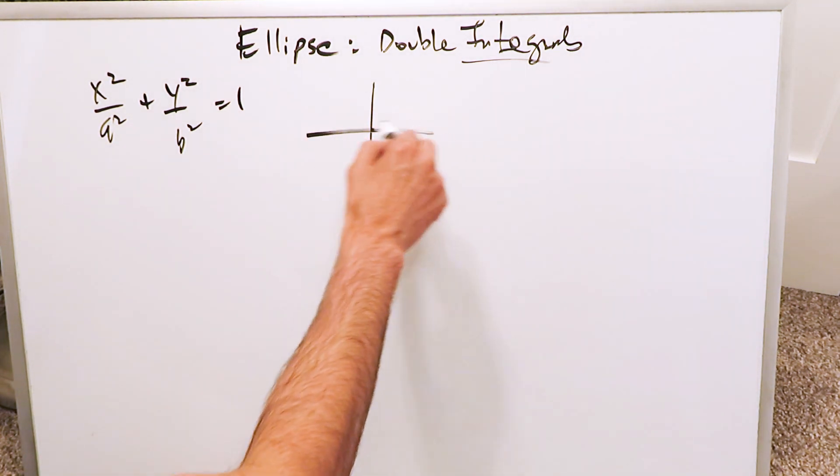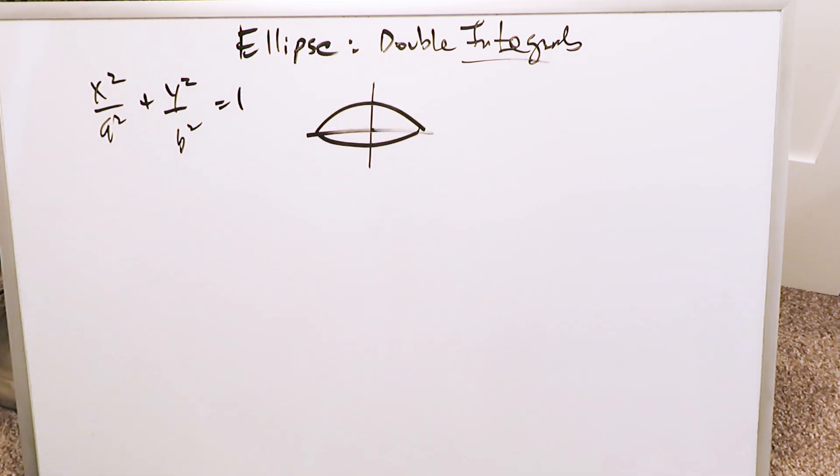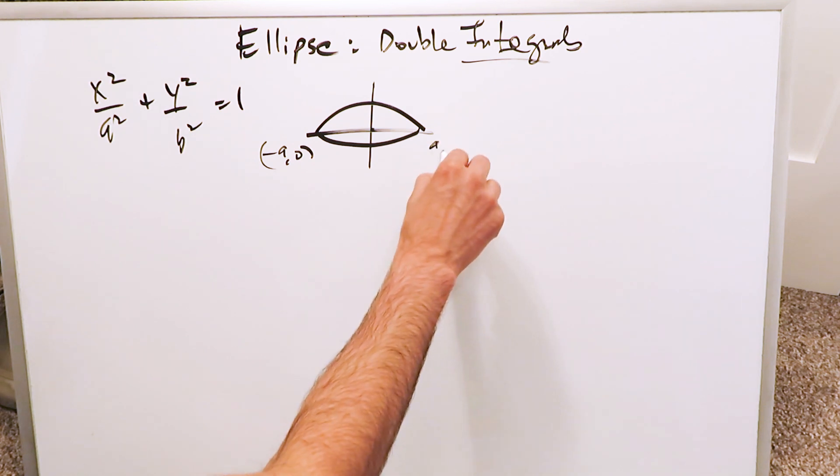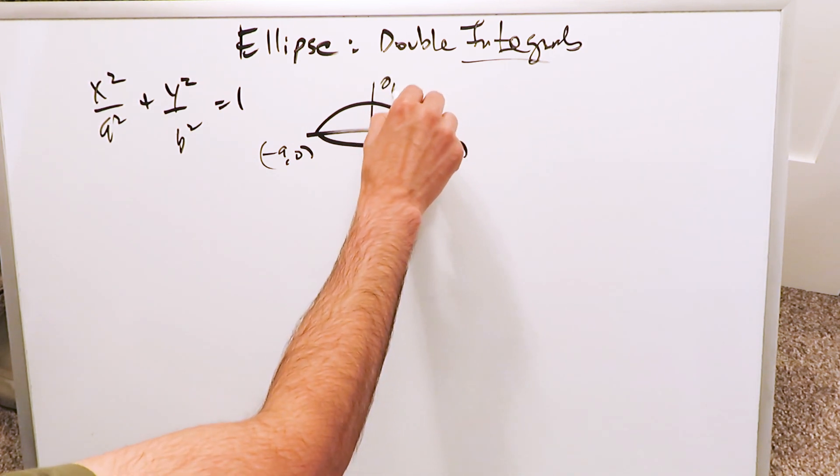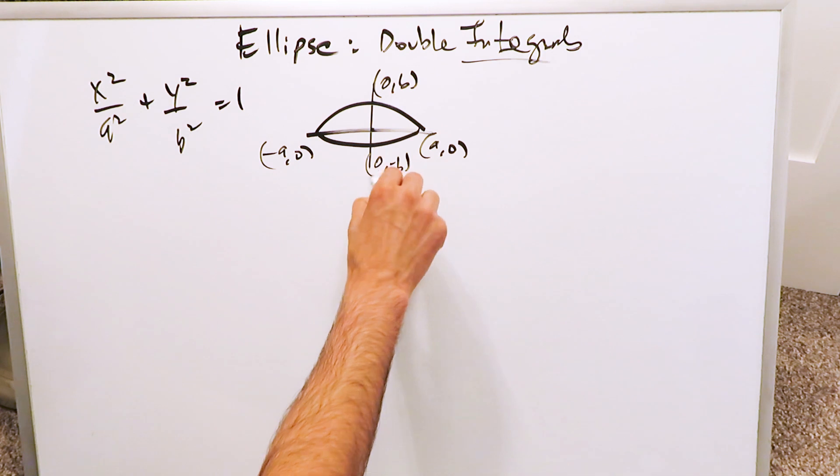You know it looks something like this. That's what it looks like. Your vertices minus a comma 0, a comma 0, minor axis end point 0 comma b, and 0 comma minus b.